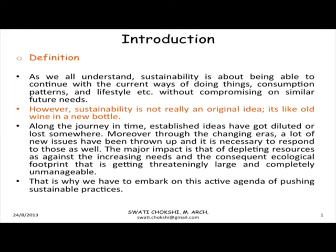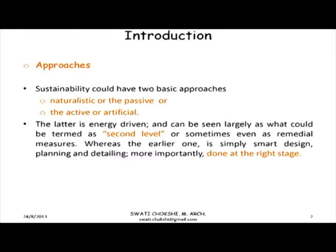Sustainability is about being able to continue with current ways of doing things without compromising on future needs. But this is not really an original idea from our times — it is old wine in a new bottle. There is no single formula for sustainability, but basically two approaches: the naturalistic or passive, which is smart design done at the right stage and cost-free; or the active, more artificial one, which is generally more energy intensive or a remedial measure.